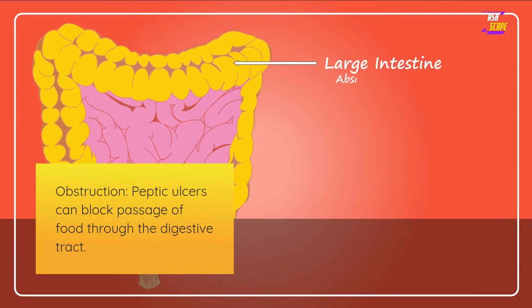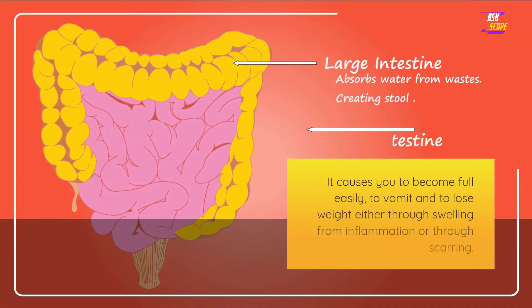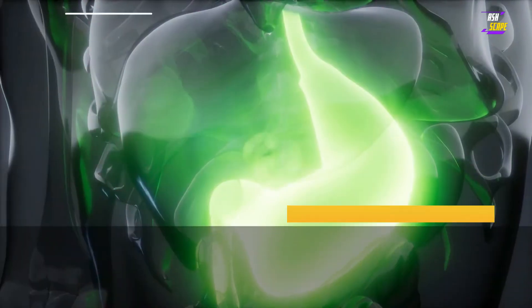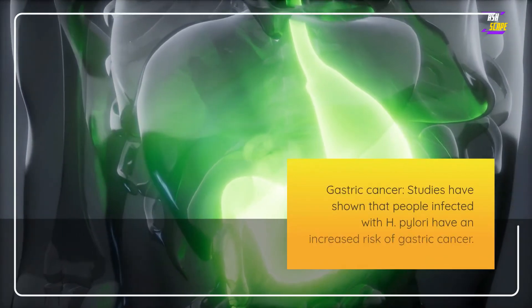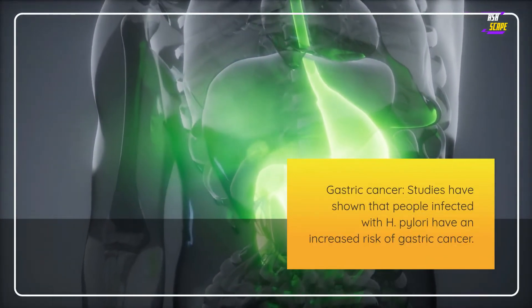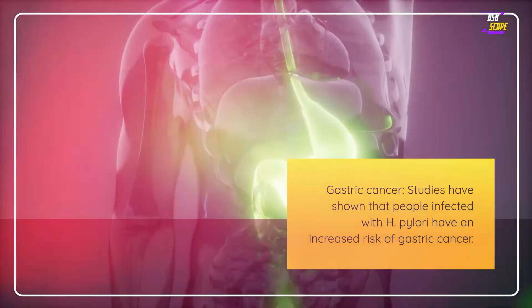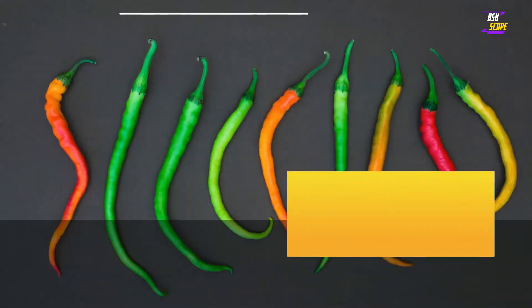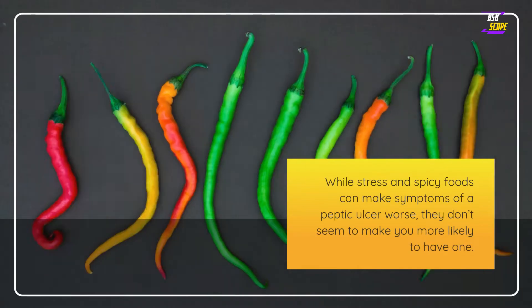Obstruction: peptic ulcers can block passage of food through the digestive tract, causing you to become full easily, to vomit, and to lose weight, either through swelling from inflammation or through scarring. Gastric cancer: studies have shown that people infected with H. pylori have an increased risk of gastric cancer.